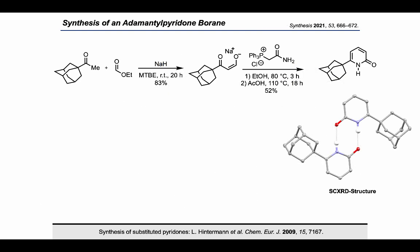Recently, we reported in Synthesis the preparation of 6-adamantylpyridone, which commences with the formylation of adamantyl ketone with ethyl formate. The Wittig reaction and the condensation under acidic conditions yield then the adamantylpyridone. Conveniently, these two steps can be operated in one pot. The sequence follows a route for the synthesis of substituted pyridones that has been devised by the group of Lukas Hintermann.